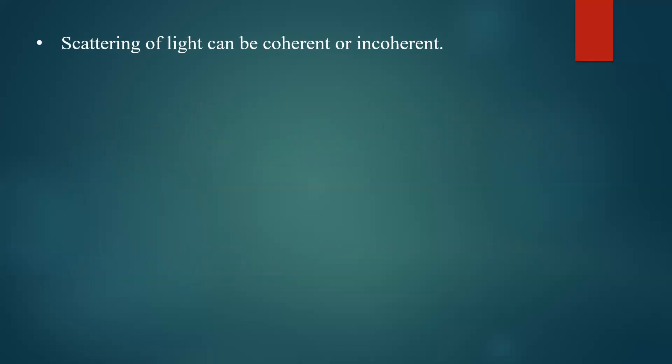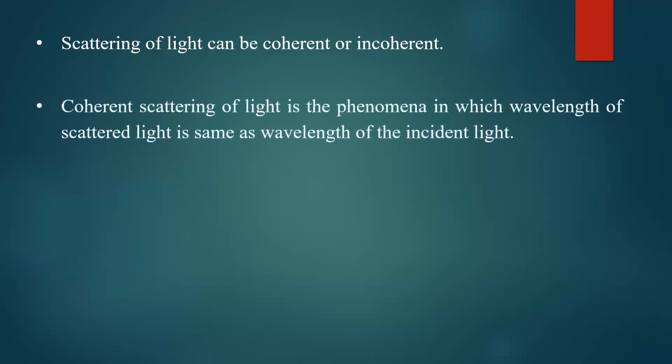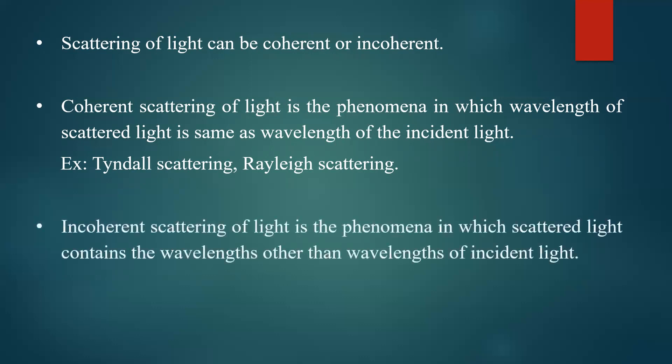There are two types of scattering: coherent scattering and incoherent scattering. Coherent scattering is the phenomenon in which the wavelength of scattered light is the same as the wavelength of the incident light — the wavelength does not change. Examples for coherent scattering are Tyndall scattering and Rayleigh scattering, in which the wavelength of incident light equals the wavelength of scattered light.